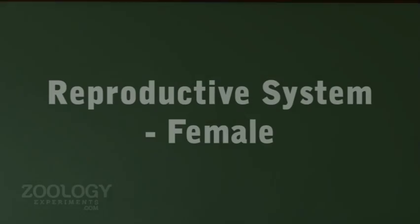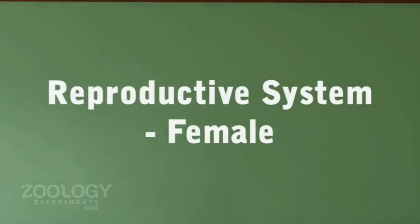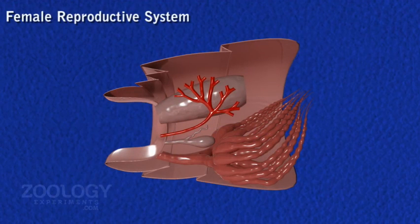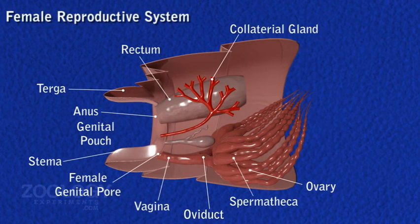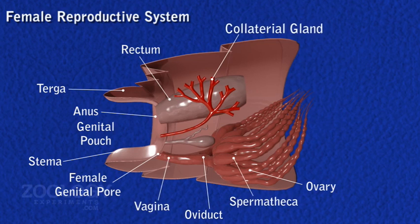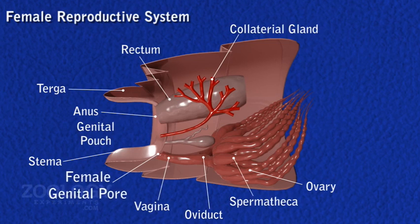Female reproductive organs include ovaries, oviducts, vaginas, spermathecae, collateral glands, genital pouch, and external genitalia. All are confined to the abdomen.